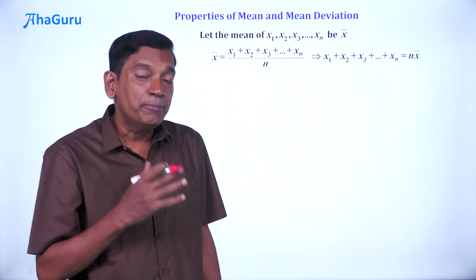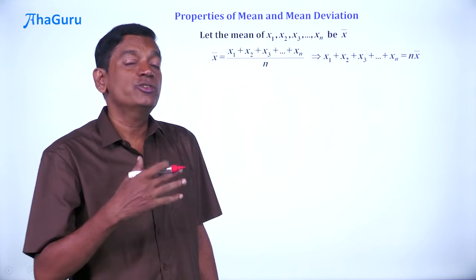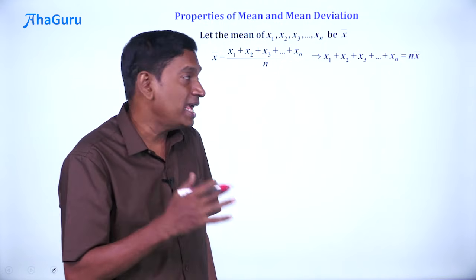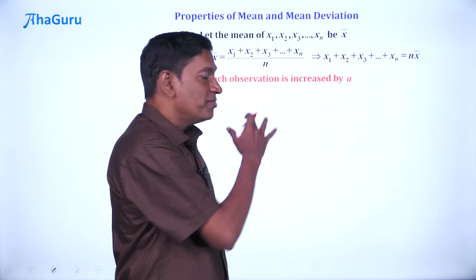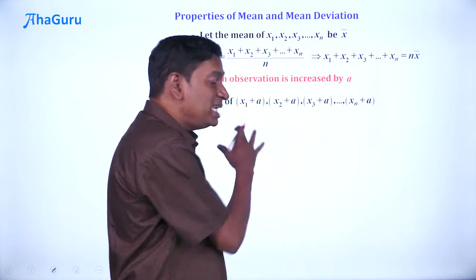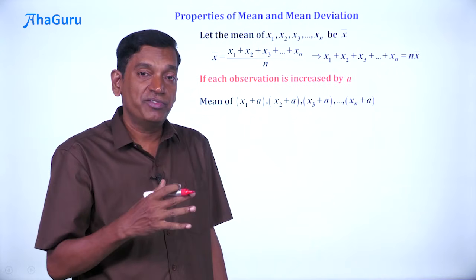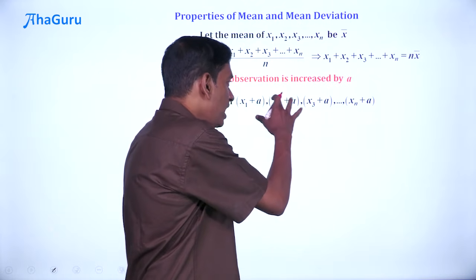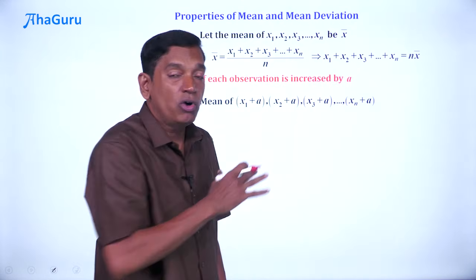Suppose we increase each observation by some number, let's say a. Then what is the mean of the new set of observations which are x₁ + a, x₂ + a, x₃ + a, and so on till xₙ + a?